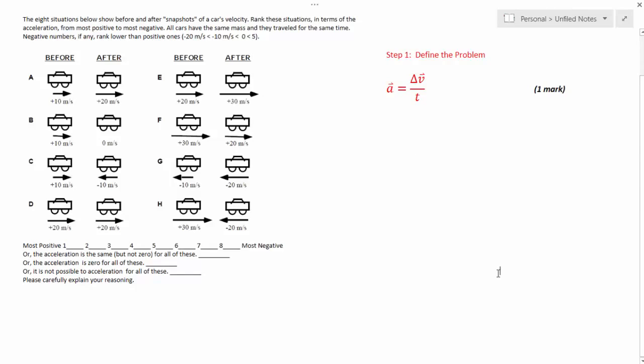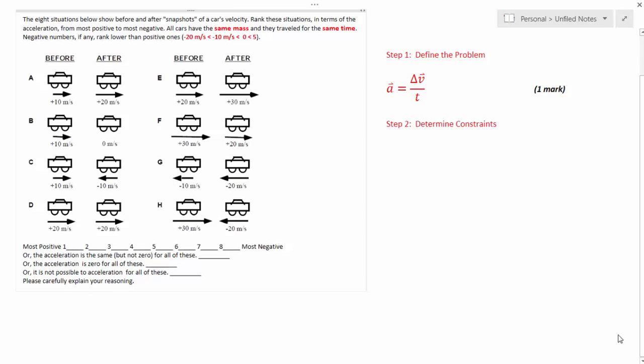Next what you want to do is read the question carefully to determine any constraints or conditions on the problem. For this question we have two main constraints. The carts have the same mass and they travel for the same time while the velocity is changing. They also state that negative numbers rank lower than positive ones and they give you an example in the bracketed region here.